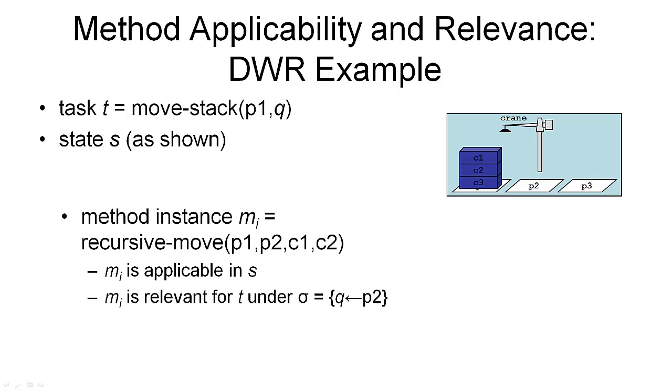And here is another quick example to illustrate applicability and relevance in the DWR example. The world state that we have is the same state we've seen earlier. We have one crane and three piles, and there are three containers on the first pile.